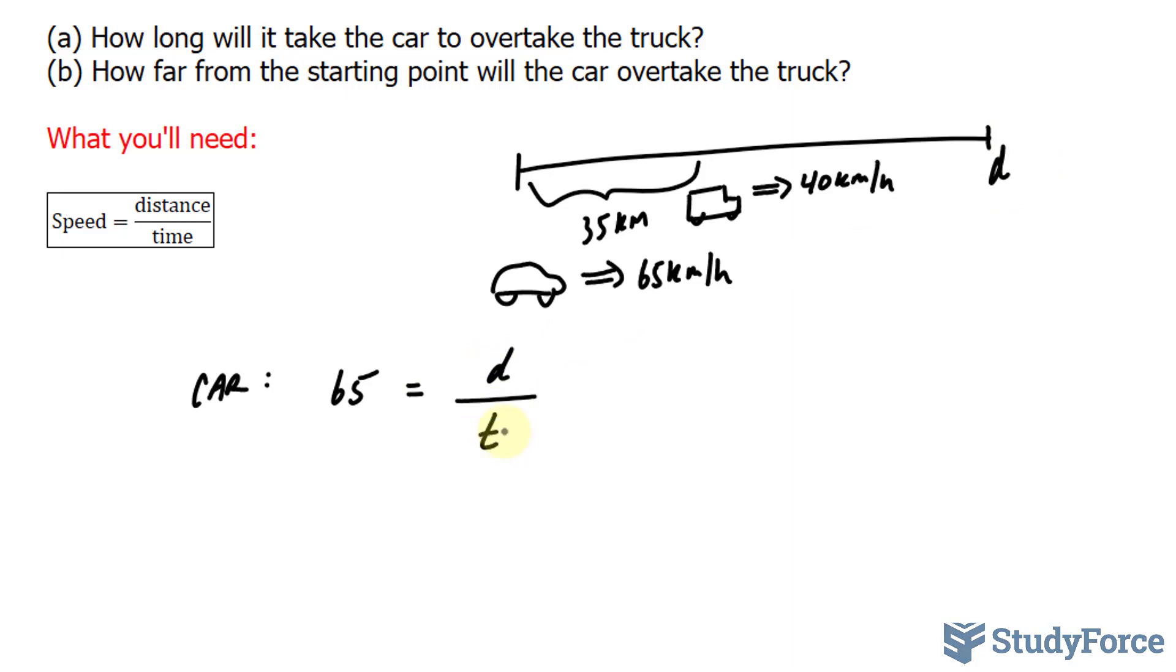Furthermore, we can also model a formula for the truck, where we have a speed of 40 kilometers an hour, and the distance remaining to get to D, the distance from here to here, will be represented as D minus 35. And I'll explain that in a second. D minus 35. That's the key to answering this question correctly, because a lot of students will make the error of adding 35 to D.